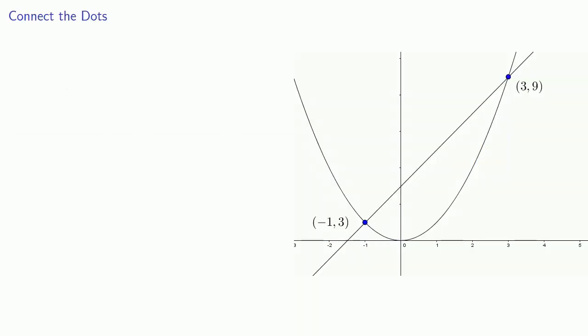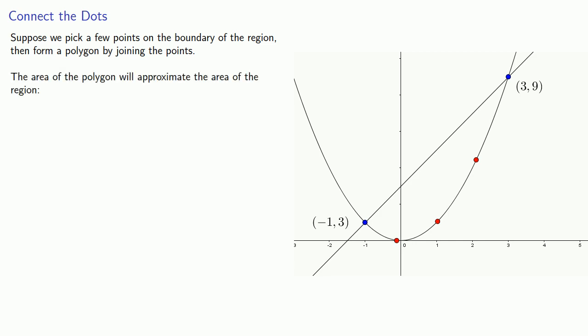Now what can we do to get a better upper and lower bound? Well one possibility is the following: suppose I pick some points along the boundary of our region, and then form a polygon by joining the points. The area of the polygon will approximate the area of the region. Actually, finding the area of a polygon is difficult, so in practice we'll use rectangles, because those are easier to work with.